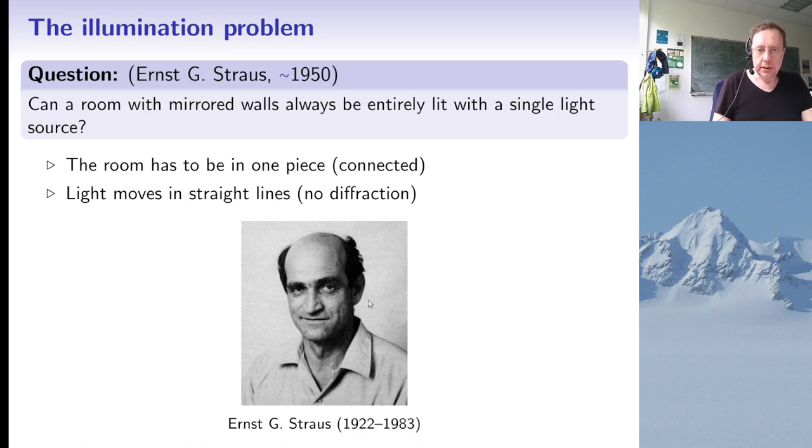So who was Ernst Strauss? Here is a picture of him. He was born in Germany in 1922 and in the early 1930s because he was Jewish, for obvious reasons he immigrated to Israel with his family and later to the United States where he worked for a few years as an assistant of Albert Einstein and then later got a position at UCLA where he worked for the rest of his life.